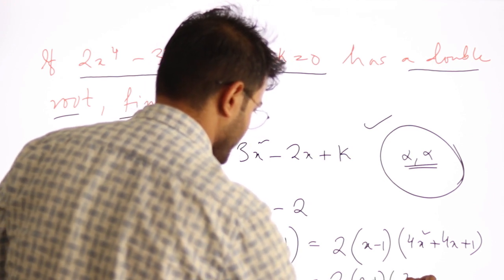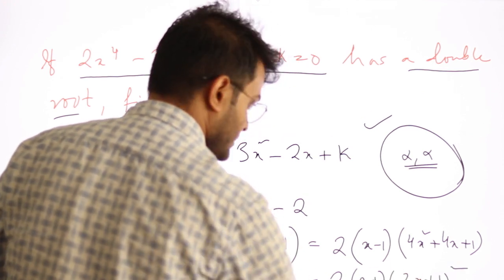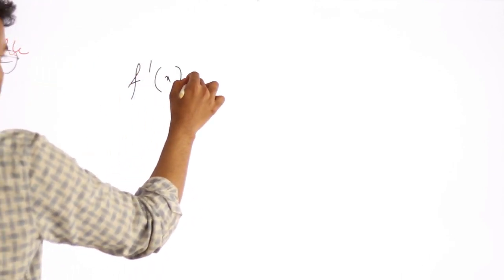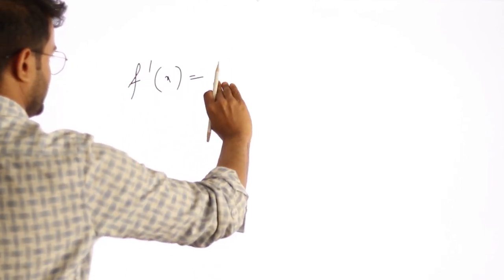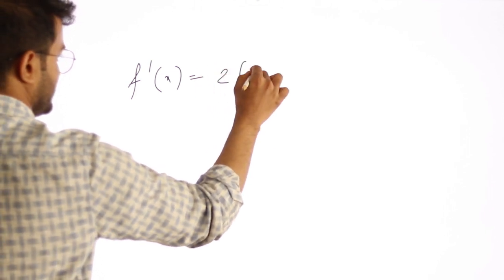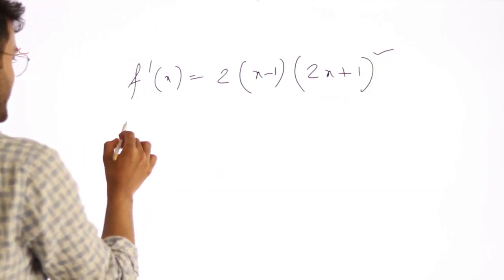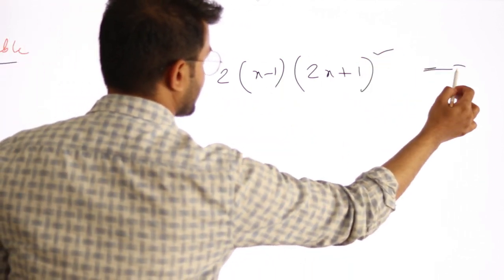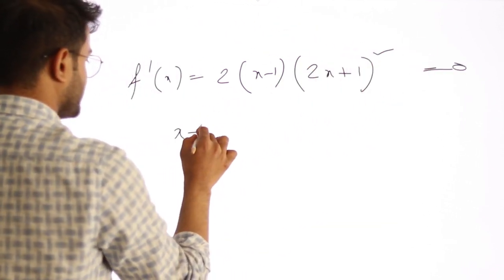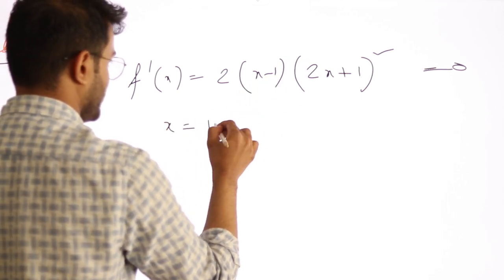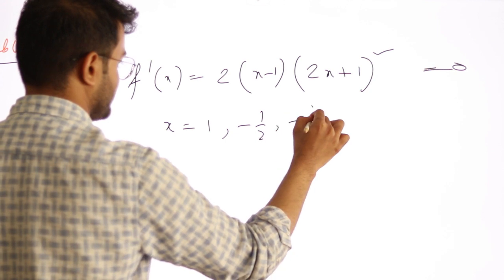2x minus 1 into 2x plus 1 whole square. So now, f'(x) is 2x minus 1 into 2x plus 1 whole square. Now, what are the roots? We need to set it to zero. So one is x equals 1, and the other is x equals minus half.